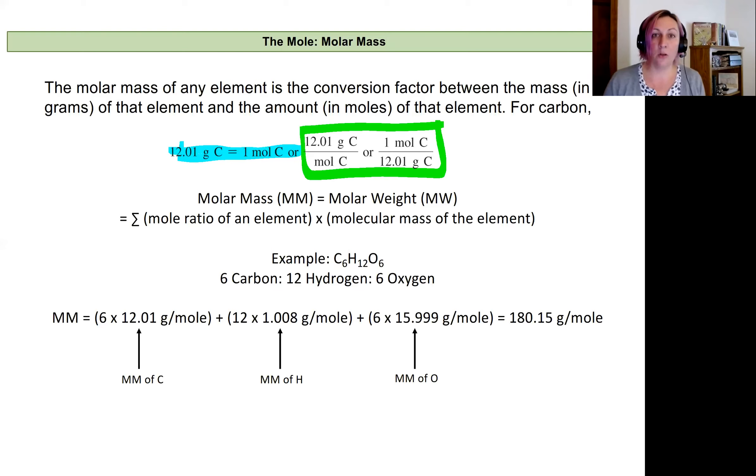So to calculate the molar mass of our example here, which is glucose, C6H12O6. That means I have six carbons, 12 hydrogens, and six oxygens. Those values are coming from the subscripts that tell me the mole ratio of the elements within the molecule or the atomic ratio of the atoms within the molecule.